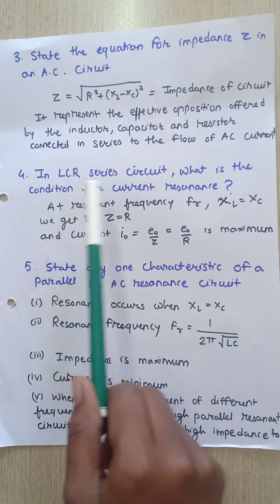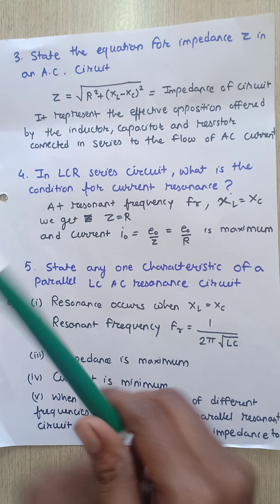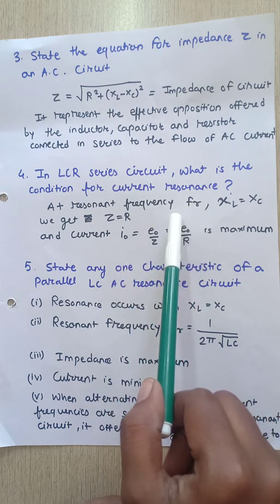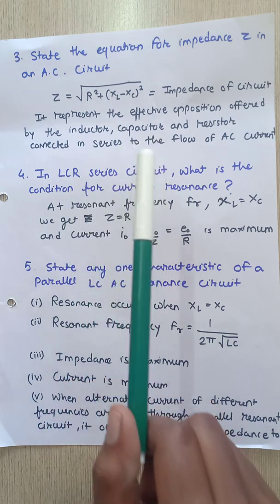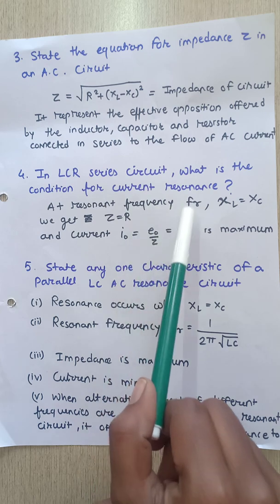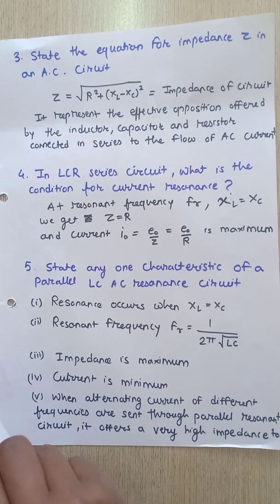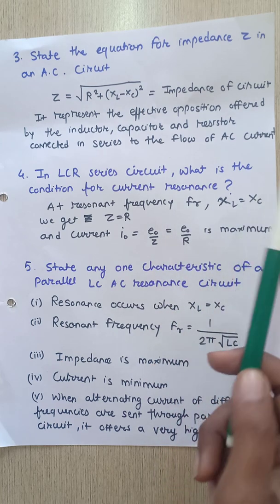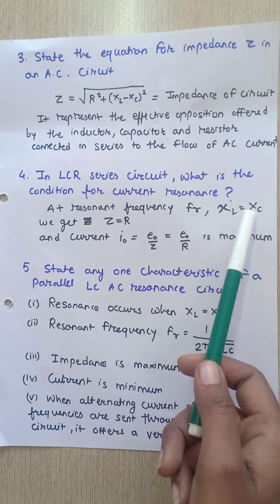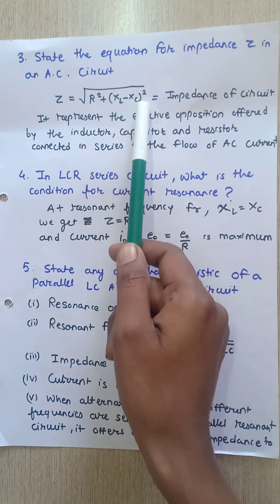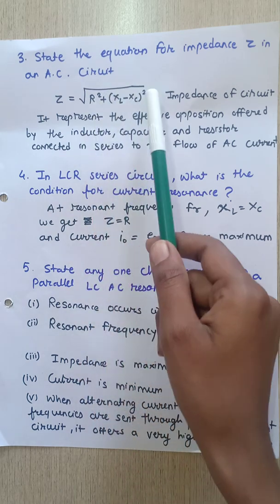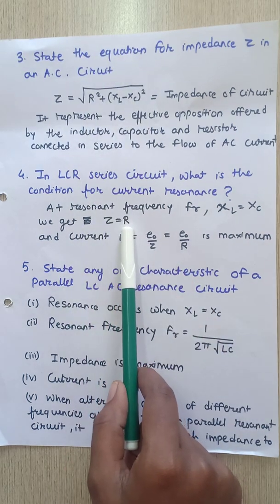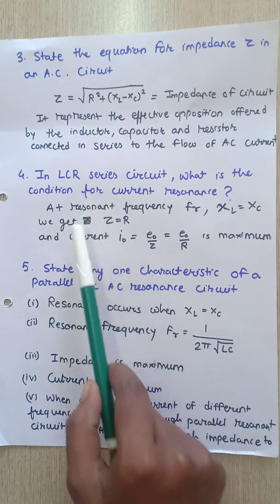The fourth question: in an LCR series circuit, what is the condition for current resonance? At resonant frequency fr, XL equals XC, meaning inductive reactance equals capacitive reactance. When this happens, the bracket (XL − XC) becomes zero, so Z equals the square root of R², which is simply R. The whole resistance is then offered only by the resistor.